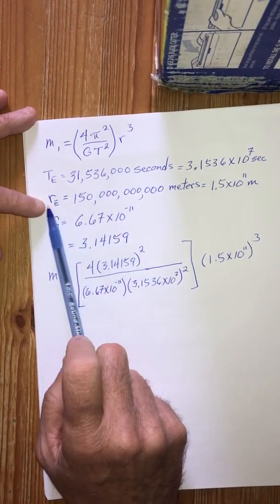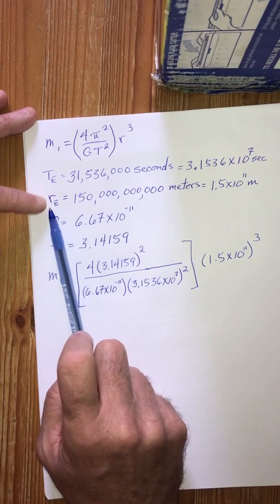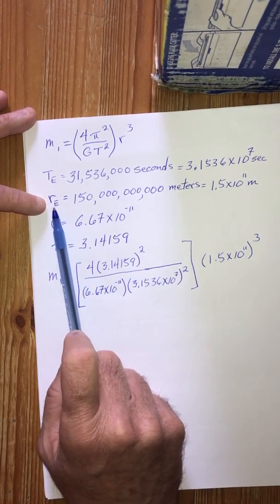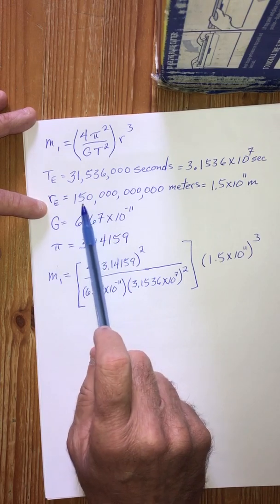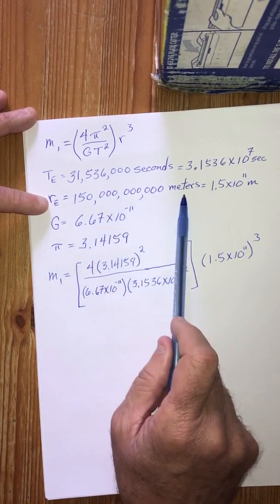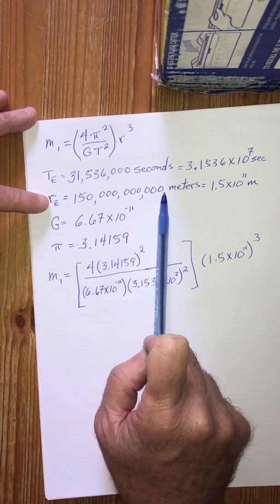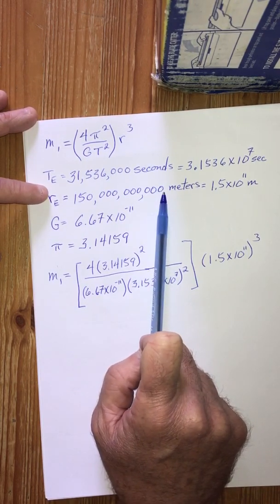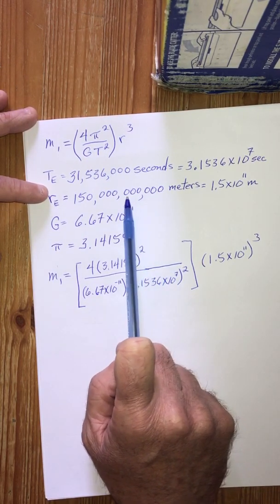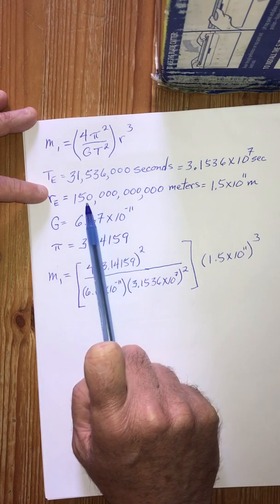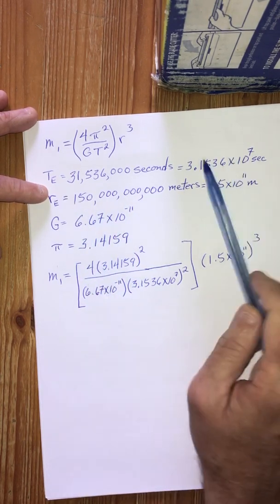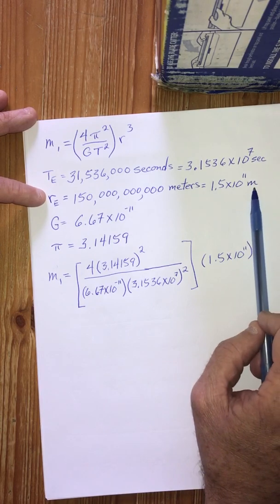I get 3.1536 times ten to the seventh. This number is the same as the number of decimal places I counted. I'm going to do something similar with the radius, the Earth's radius, the distance from the Sun to the Earth, which was 150 billion meters. So we're going to count three, six, nine, ten, eleven. So that means 1.5 times ten to the eleventh.